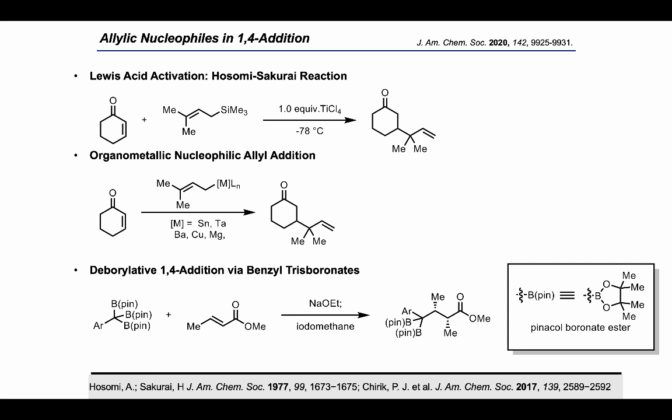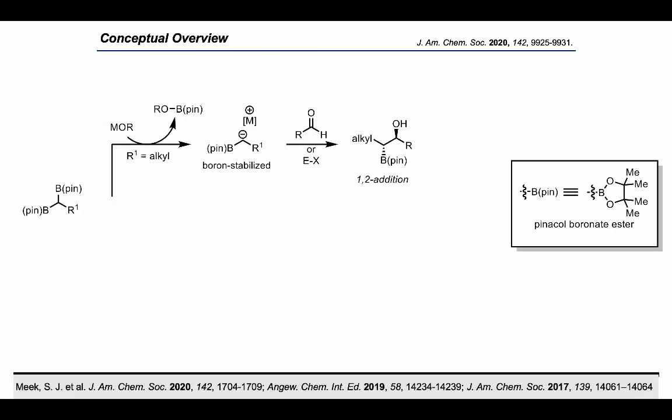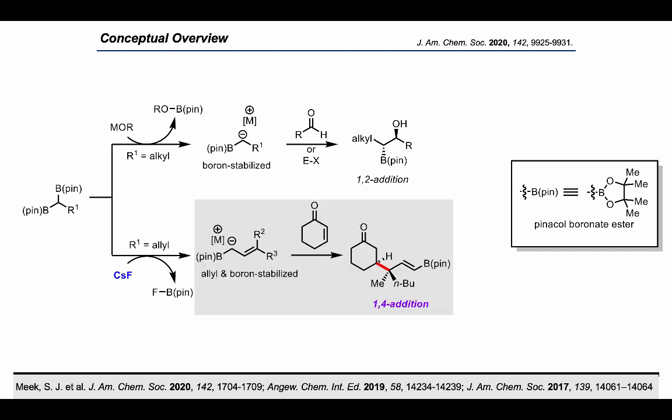An active area of our research in the Meek lab focuses on the use of 1,1-organodiborons. Previous work in our lab has used alkyl 1,1-organodiborons to undergo deboronative transmetallations with a metal alkoxide to generate boron-stabilized carbanions. This can then go on to react with electrophiles and perform anti-selective 1,2 additions to carbonyls. We took note from this strategy and sought to use recently developed allyl 1,1-organodiborons to generate carbanions that are both boron and allyl stabilized. We hypothesized that this soft nucleophilic species would then be able to engage in 1,4 additions to alpha-beta unsaturated ketones.